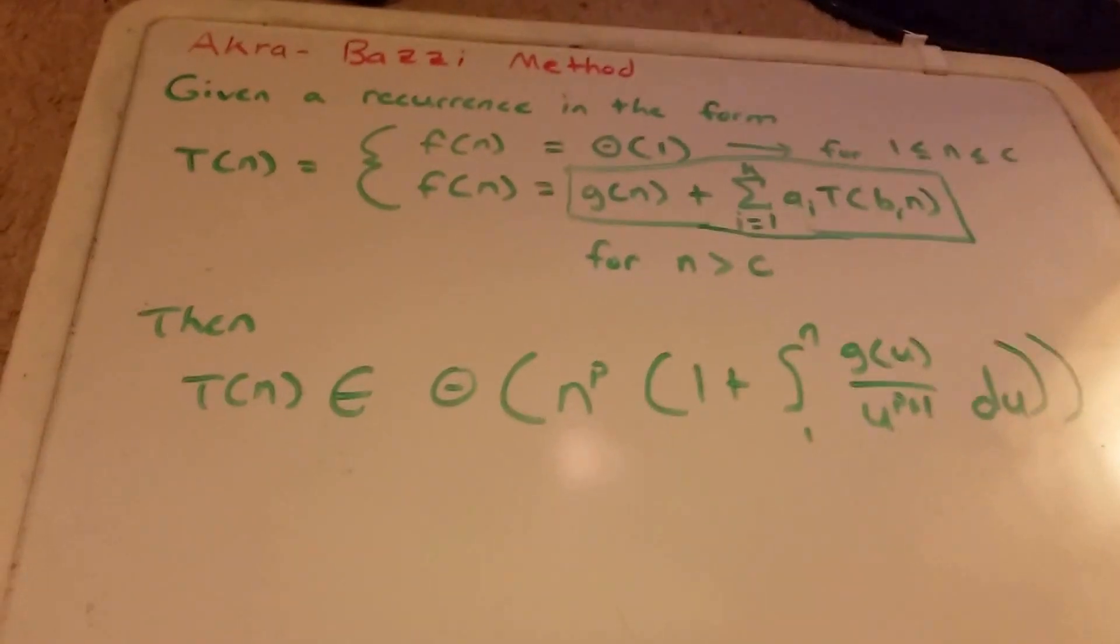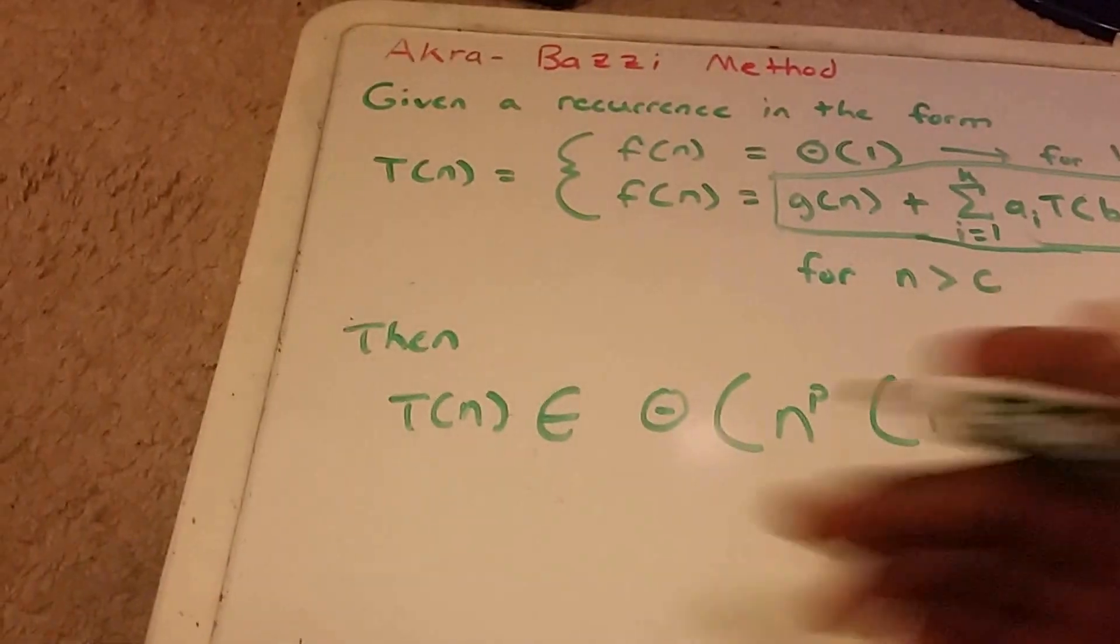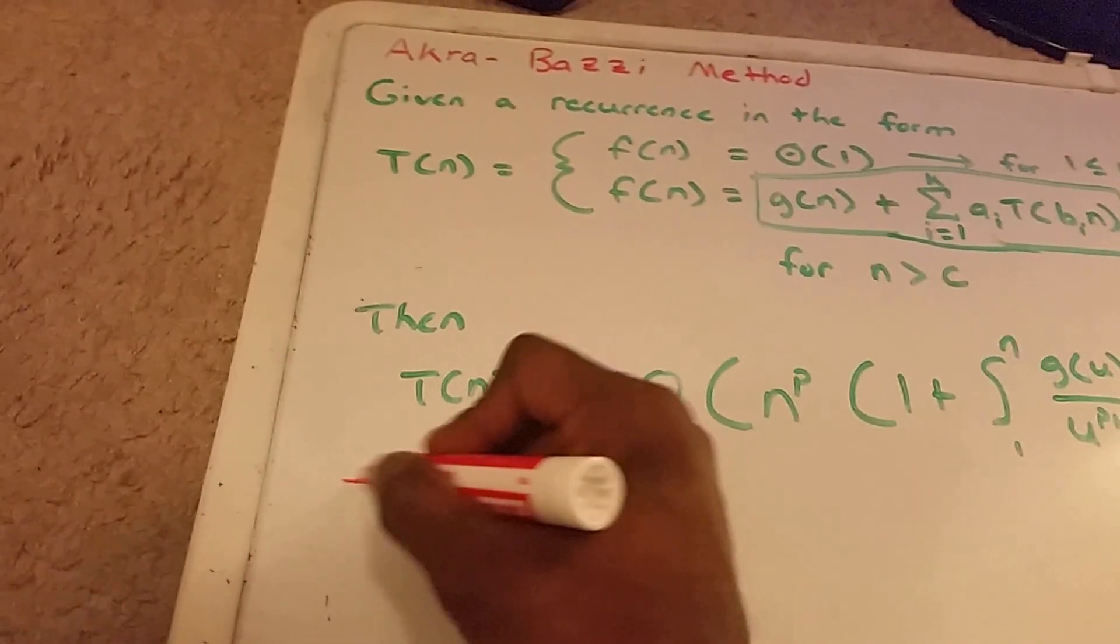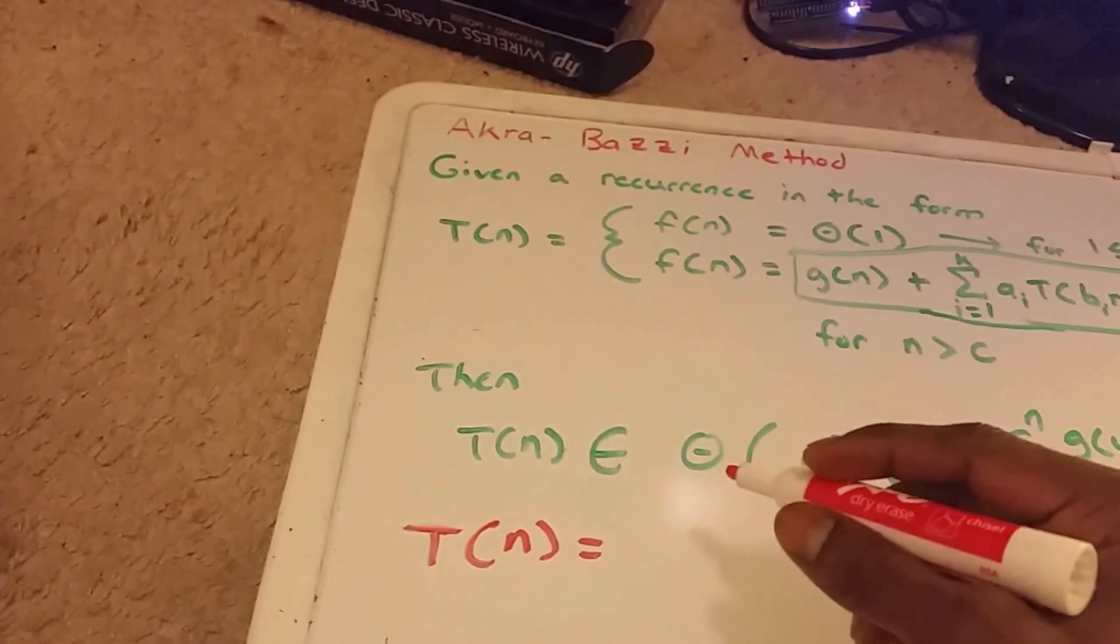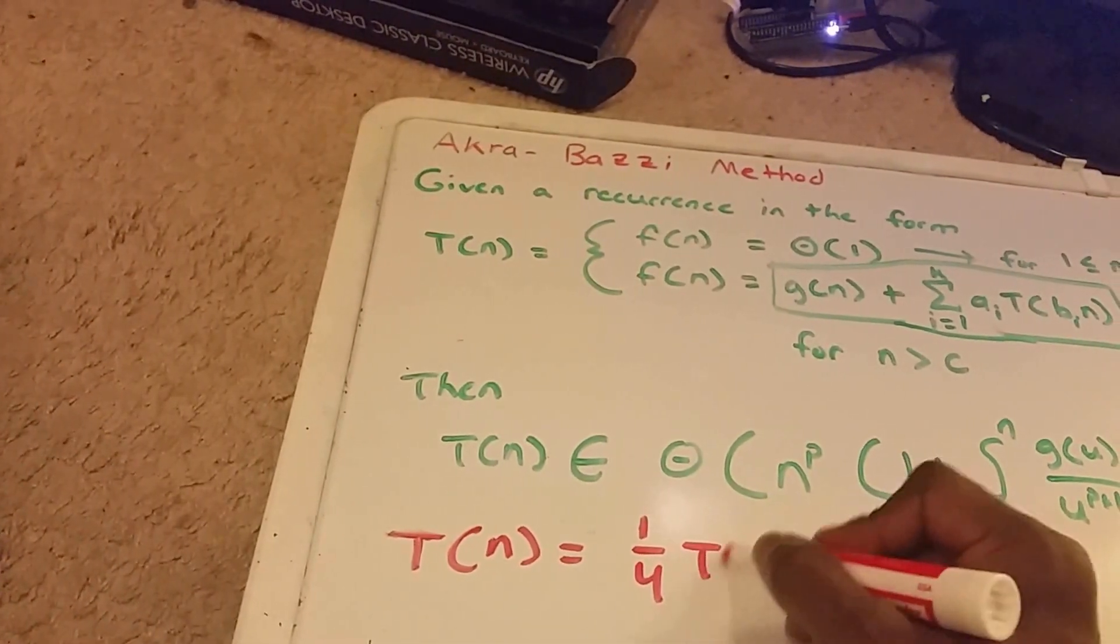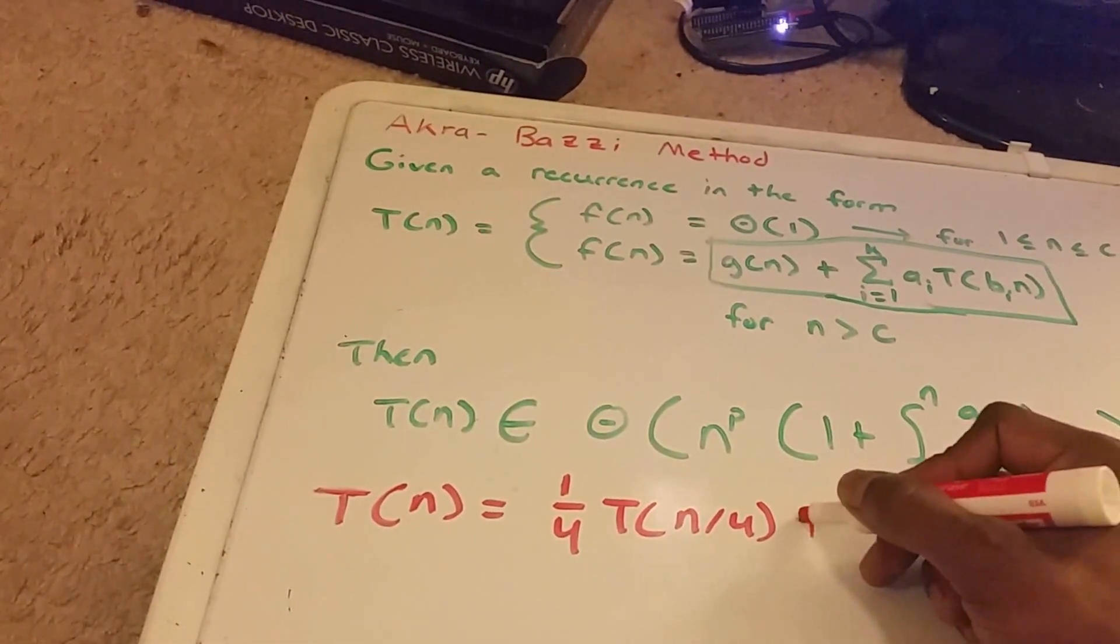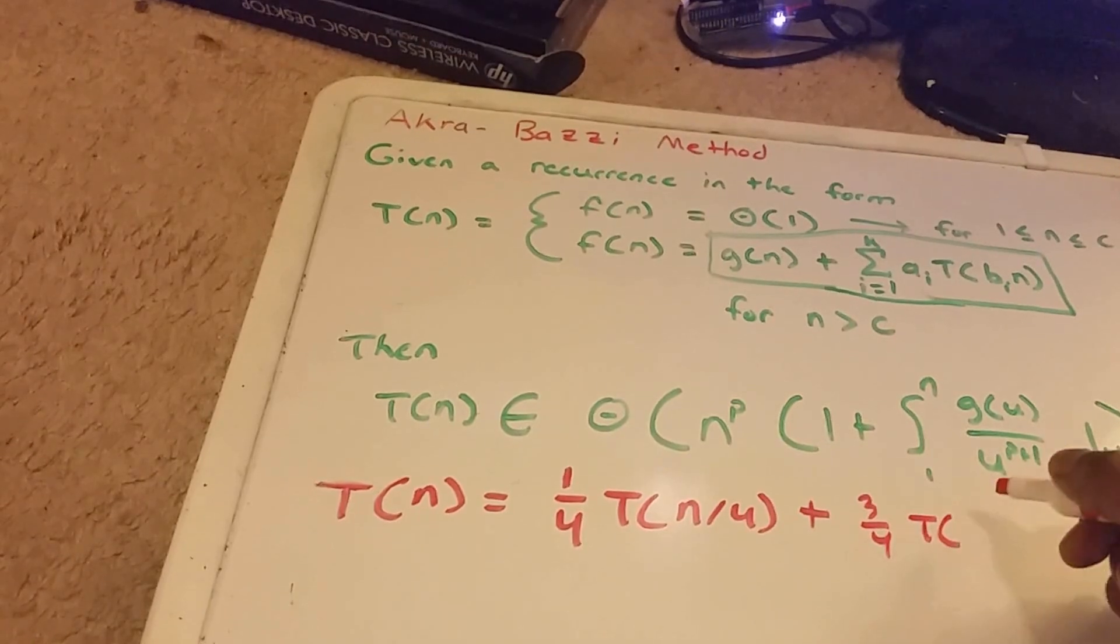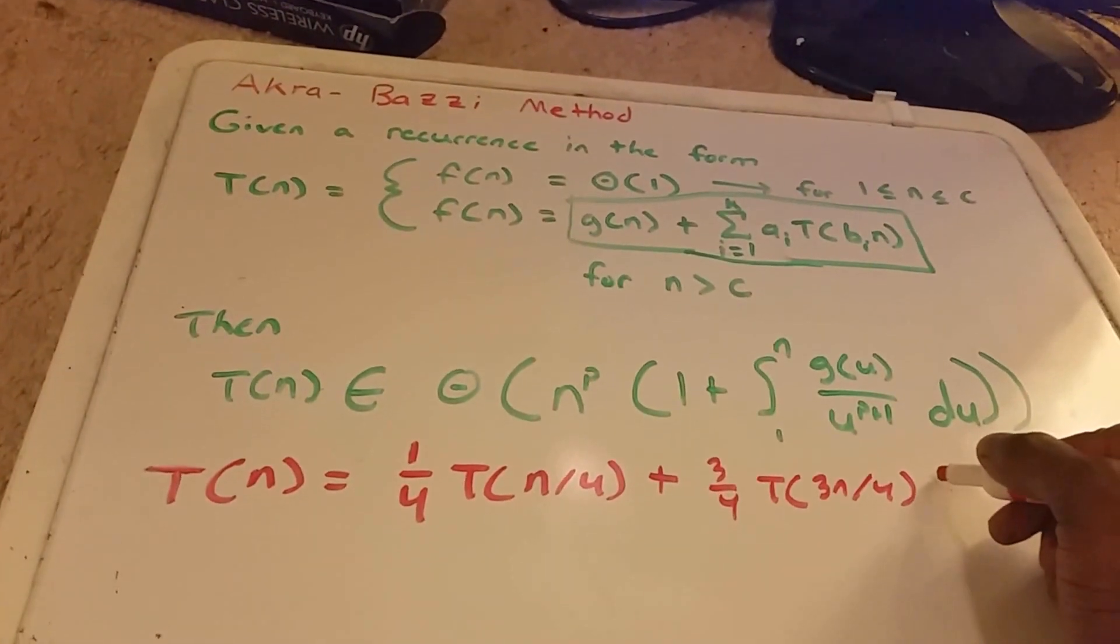So let's give an example. Alright, so an example would be, let's say we want to solve the recurrence T of n is going to be equal to 1 fourth times T of n divided by 4 plus 3 fourths times T of 3n divided by 4 plus 1.